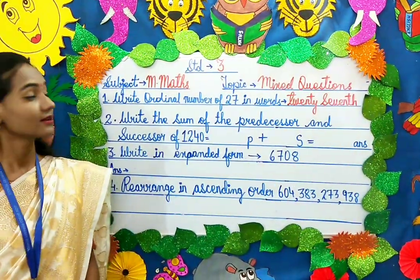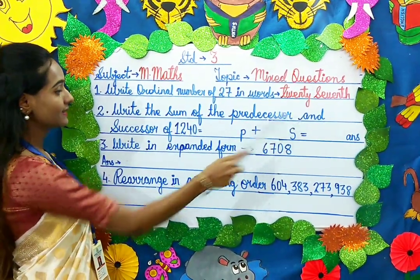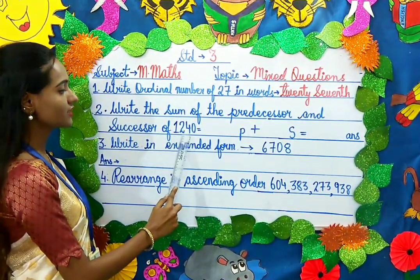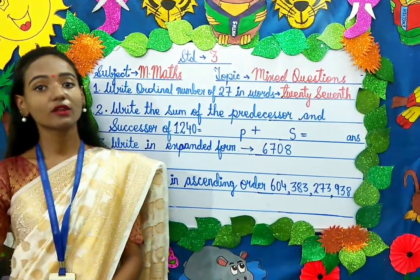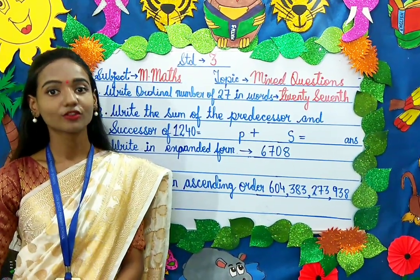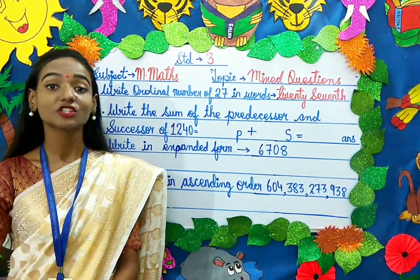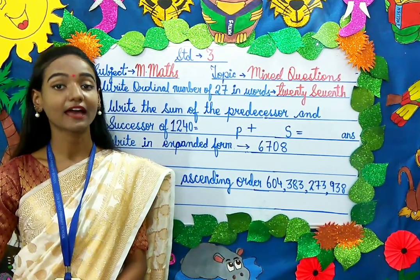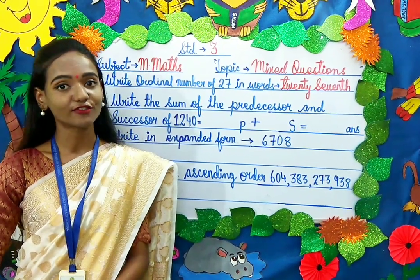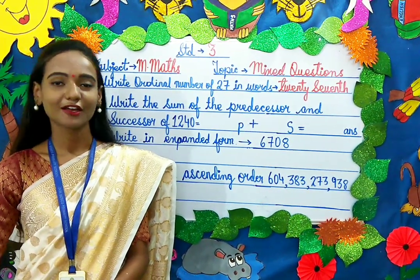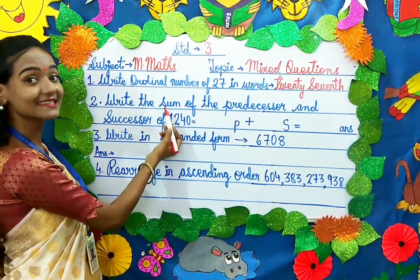Moving on to the next question. Write the sum of the predecessor and successor of 1240. Before moving on, what is predecessor and successor? You have already studied this in your previous class. The predecessor is the number that comes just before a given number, and the successor is the number that comes right after the given number.